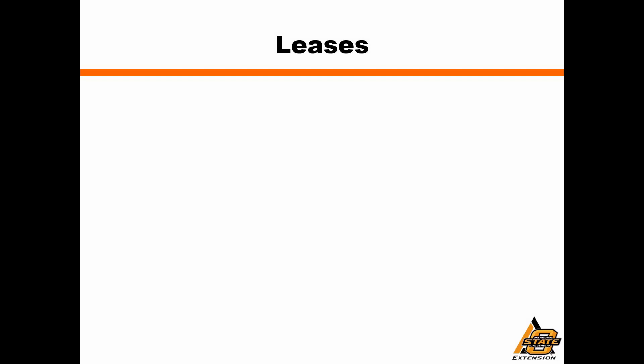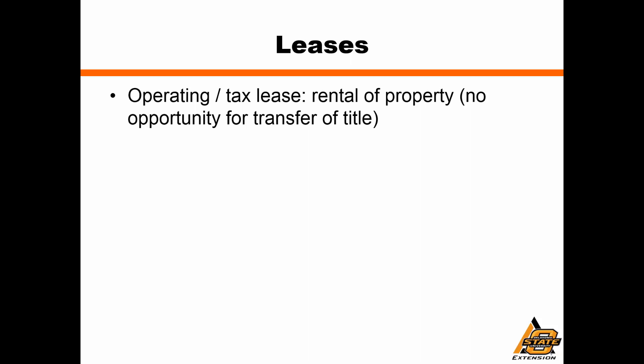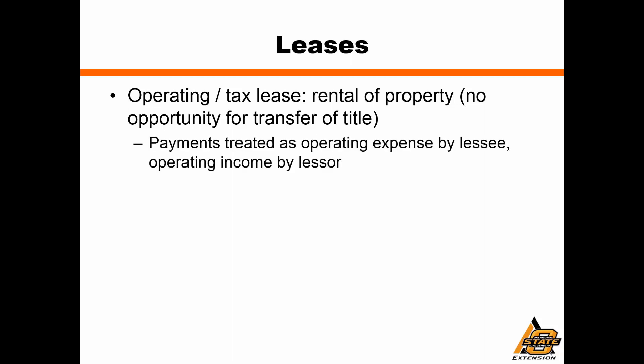Now we come to leases, which come in two large categories: the operating lease and the capital lease. An operating lease is what you typically think of as a rental of property — limited use for a limited time, after which the asset is returned with no transfer of title. The payments are treated as operating expenses by the lessee, recognized as operating income by the lessor, and the lessor, since they still retain title, can also claim depreciation on the asset.